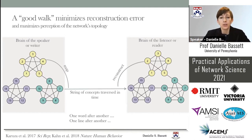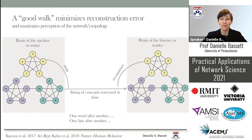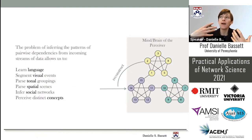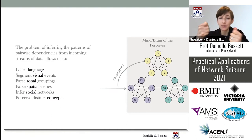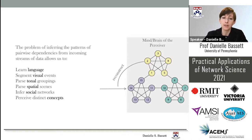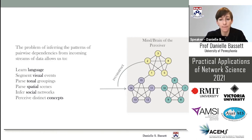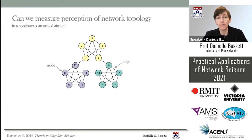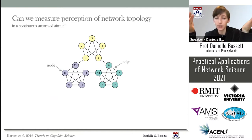Reconstructing something high-dimensional from a 1D stream sounds like magic, but humans do this all the time. The more basic problem of inferring patterns of pairwise dependencies from one-dimensional streams of data is actually what allowed us to learn language as infants. It also allows us to segment visual events, parse tonal groupings, parse spatial scenes, infer social networks, and perceive distinct concepts. But how do humans do it? To answer this, we need an experimental setup.